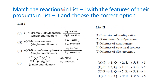Let us see the question. Match the reaction in list 1 with the features of the product in list 2, and choose the correct option. A list of chemical reactions is given on the left-hand side. The reactants are all single enantiomers, the mechanism is indicated in the reaction arrow, and the stereochemistry of the products is given. We have to match list 1 with list 2 by finding the product and identifying which parameters match.